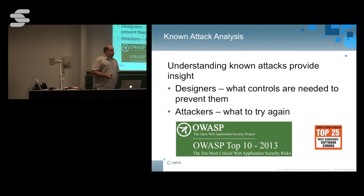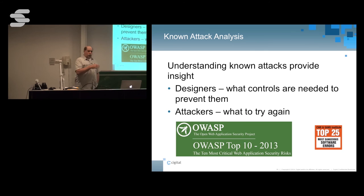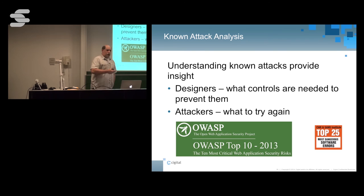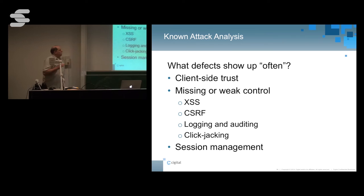Known attack analysis: there is a wealth of information about how these attacks work — books and books have been written about it. You can rest assured the attackers know exactly how the attacks work. This list of known attacks is, from a defensive point of view, exactly the types of things we have to make sure we have controls in place to prevent. It's exactly what attackers are going to start with, because attackers are inherently lazy — they're going to go for the easiest thing first. They're not going to try some crazy zero-day exploit; they're going to launch some basic attack at you and hope it works. What are the defects that show up most often? Client-side trust is big. Missing or weak controls from a design point of view — a way to bypass a control, the control's not there, we're not doing something correctly.